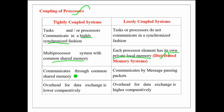In tightly coupled systems, communication is made between the multiple processors through a common shared memory. That's why the communication overhead or overhead for data exchange is lower comparatively in tightly coupled systems. Whereas in loosely coupled systems, communication is achieved by message passing packets, which is why communication overhead is higher comparatively in loosely coupled systems.